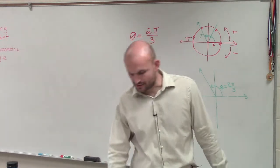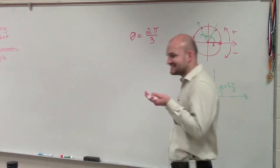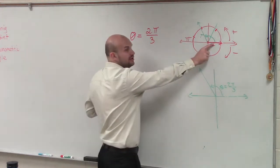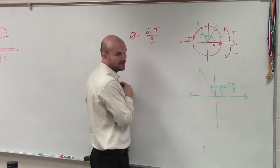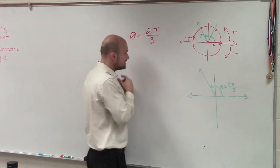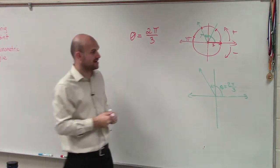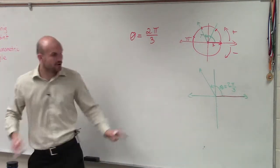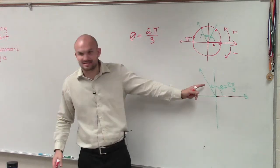So ladies and gentlemen, what they're asking, when we're asking for coterminal angles, they're asking us to determine, tell me, determine another angle that has the exact same initial and the exact same terminal. Exact same initial side, exact same terminal side. So therefore, we're always going to start then on this side. But how many different ways can I get to this?